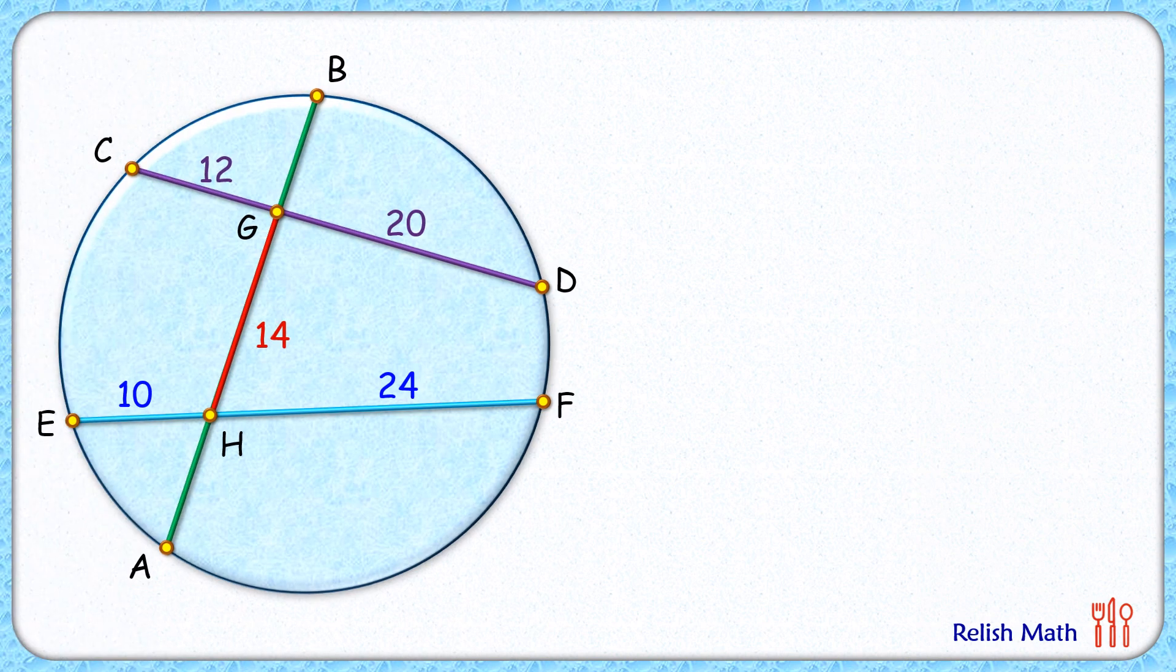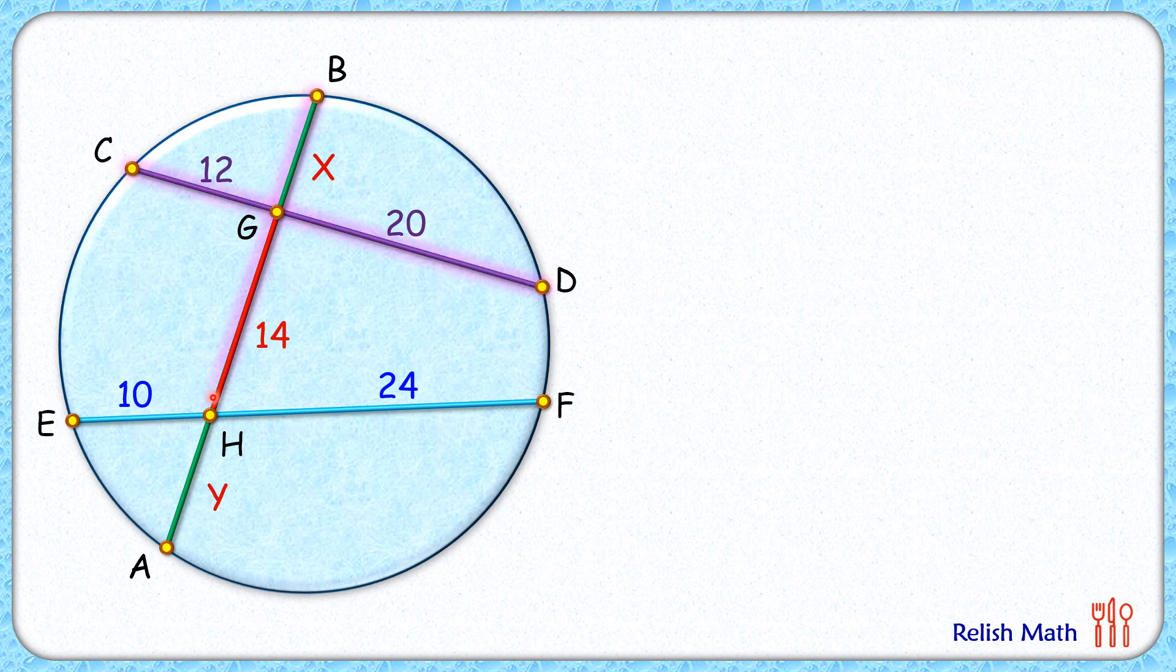Let's start by assuming the length BG is x centimeters and HA is y centimeters. So here, if we look at the chord CD and chord BA, now both the chords are intersecting at point G.